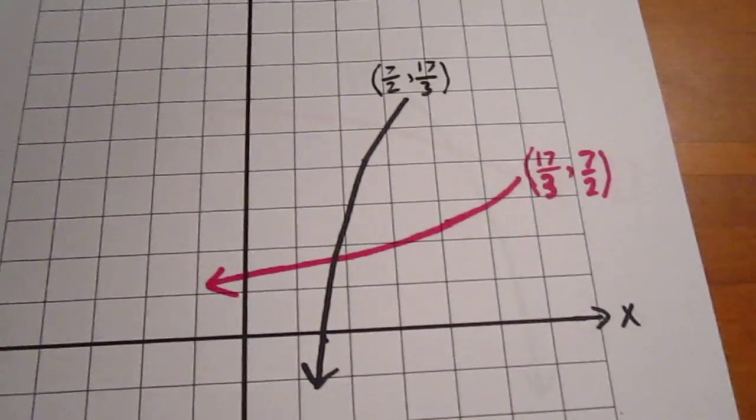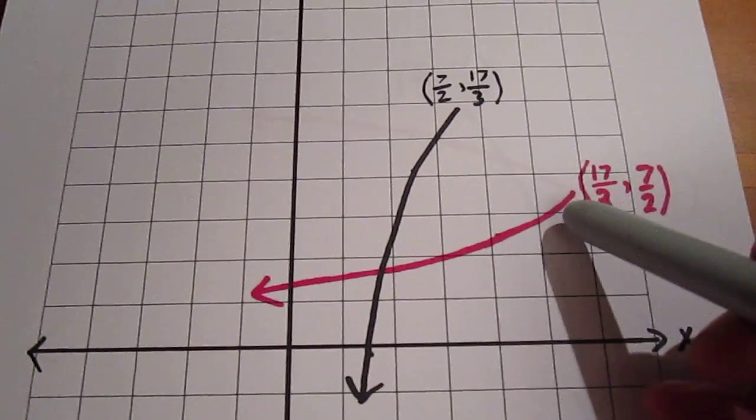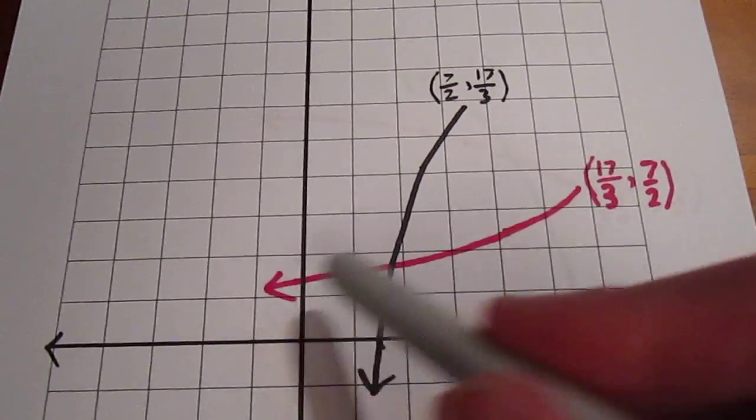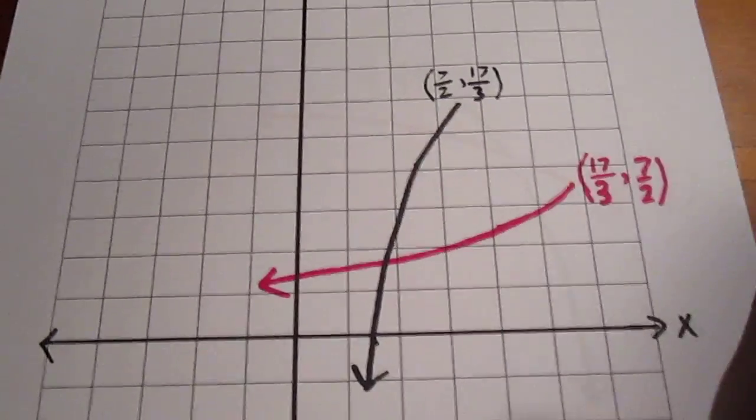Our first option is to say that x is less than or equal to 7 halves, which would mean that y would be less than or equal to 7 halves, and we would get this lower turning bar on our inverse.